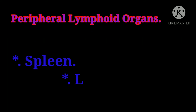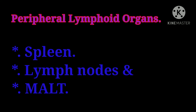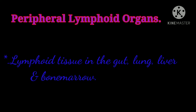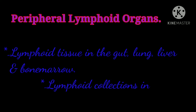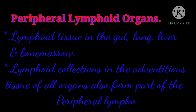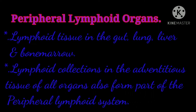The spleen, lymph nodes and mucosa-associated lymphoid tissue (MALT) are the major peripheral lymphoid organs. The lymphoid tissue in the gut, lungs, liver and bone marrow, and lymphoid collections in the adventitious tissue of all organs, also form part of the peripheral lymphoid system.